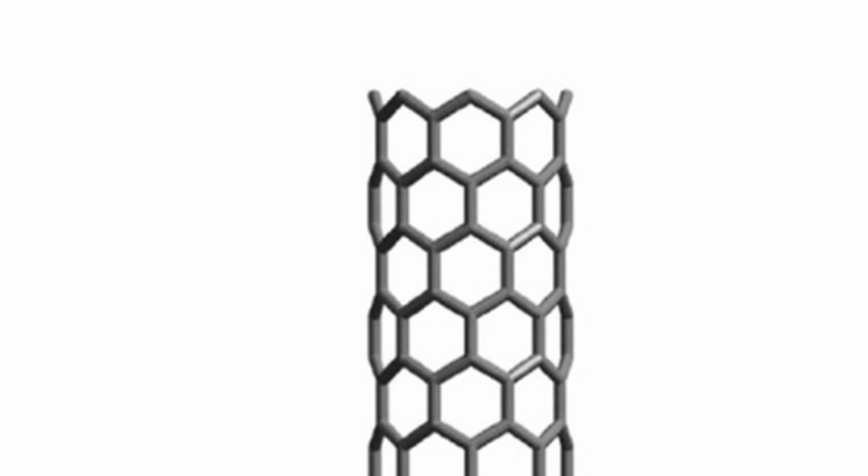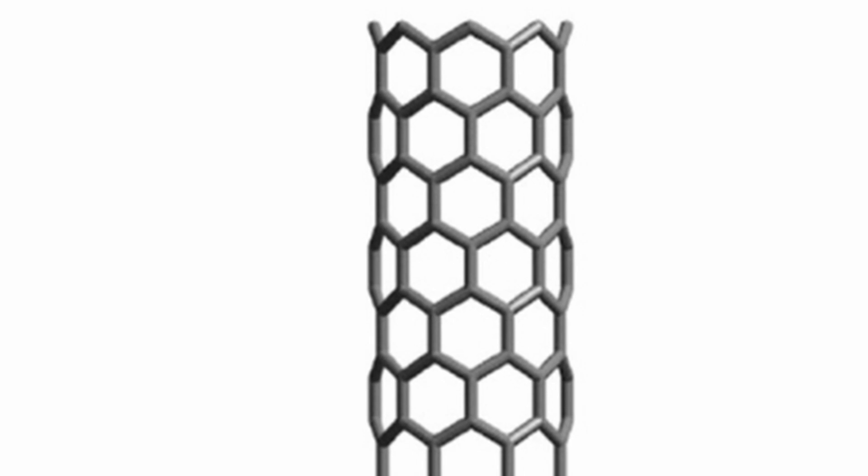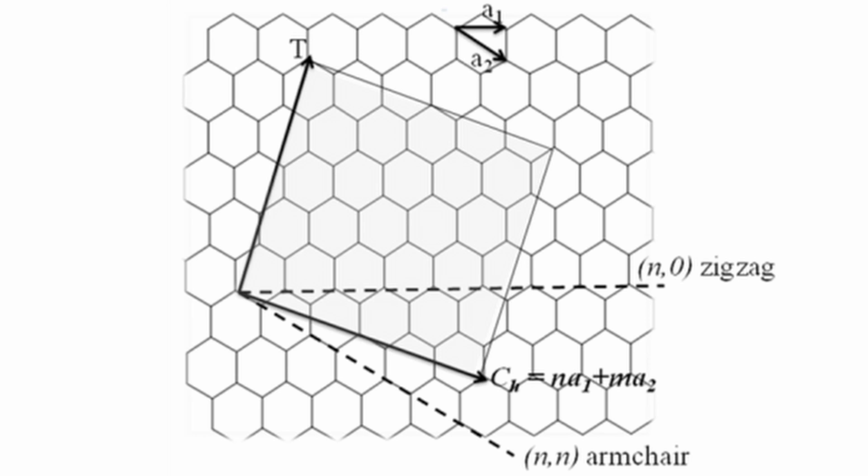For armchair nanotubes, the carbon nanotubes exhibit identical chiral indices, which make them and their resulting arm-like chair shape perfect and highly desirable for excellent conductivity. On the other hand, zigzag carbon nanotubes are so called because their chiral indices give them a zigzag appearance. They typically exist as semiconductors and can easily be converted into armchair carbon nanotubes by turning a graphene sheet by exactly 30 degrees.